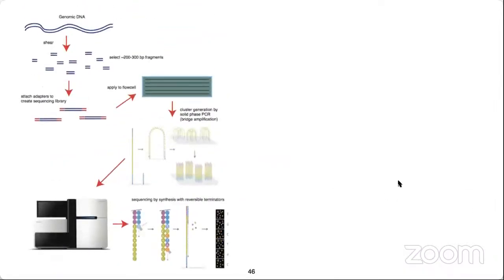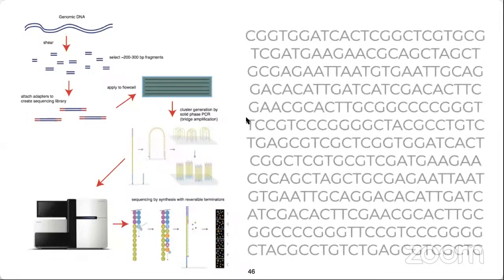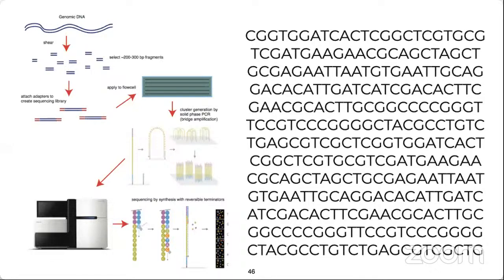The NGS technology captures DNA sequences and generates digital data through several steps. First, genomic DNA is extracted from the cells, sheared, and placed in a flow cell, where DNA fragments are amplified using PCR or bridge PCR amplification. These amplified fragments are then inserted into the sequencer, which uses image analysis to capture each letter in the flow cell by analyzing visual patterns and converting them into a sequence of letters.